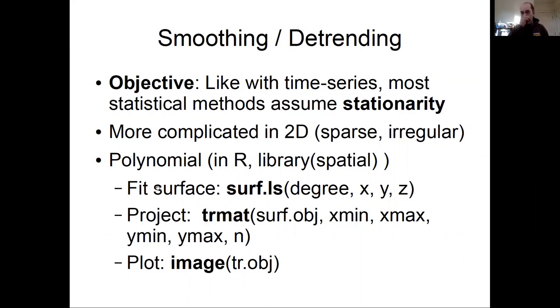The idea of constant mean and second-order stationarity, where the variance is just a function of distance, are built into the vast majority of spatial statistical methods.